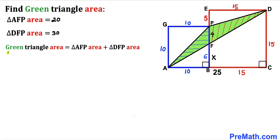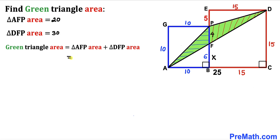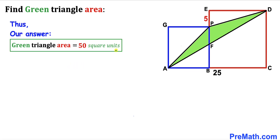Here's our final step: the area of green triangle APD equals the area of triangle AFP plus the area of triangle DFP — that is 20 plus 30, which gives us 50. So the area of the green shaded triangle APD turns out to be 50 square units. Thanks for watching, and please don't forget to subscribe to my channel for more exciting videos!